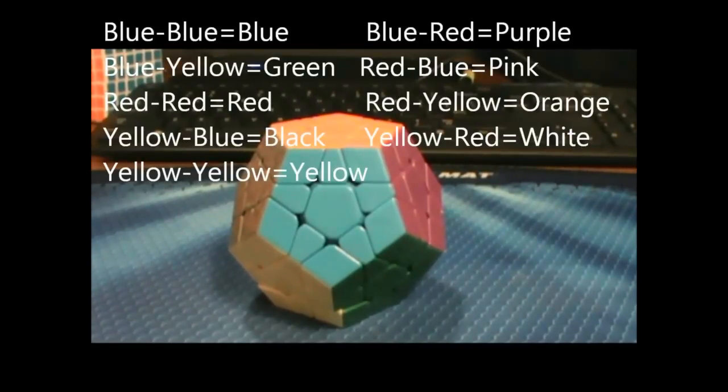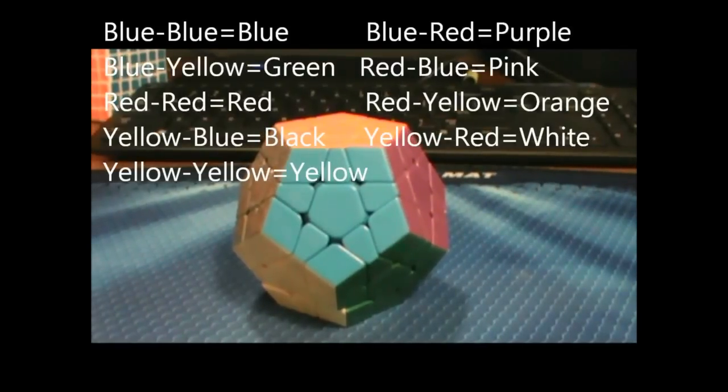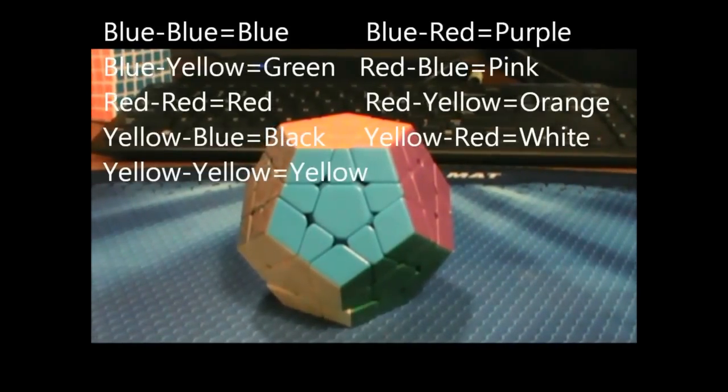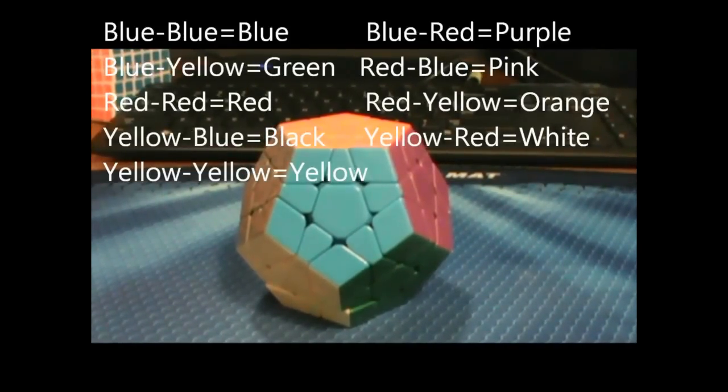And then you do this for all the other combinations, there's like nine. Yeah, so there's nine combinations. And also red-red, or blue-blue, or yellow-yellow. That's, you know, yellow, or red, or blue. Primaries.